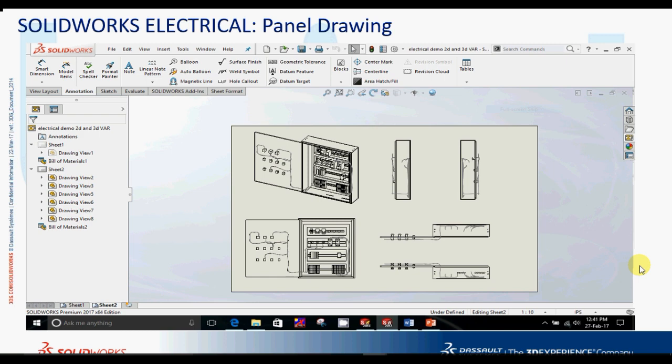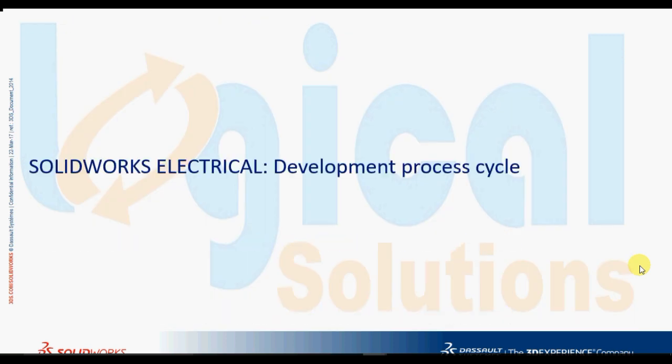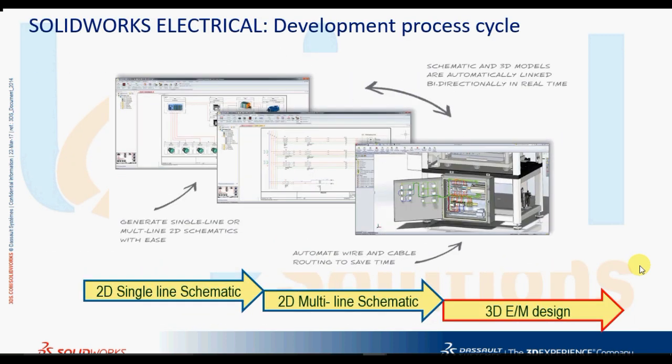The SOLIDWORKS ELECTRICAL 2D cabinet creation tool can easily generate 2D panel representations from an electrical 3D drawing after sketching and routing is completed. The SOLIDWORKS ELECTRICAL development process cycle begins by creating a schematic drawing, then a 2D multi-line schematic, and finally a 3D electromechanical design is generated automatically with a complete bill of materials.